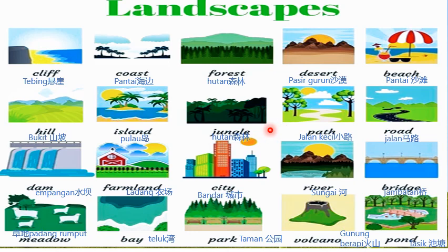More landscapes include: jungle, farmland, city, river, and bridge.